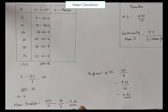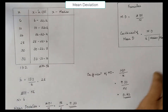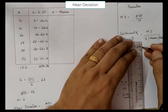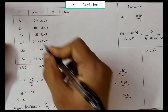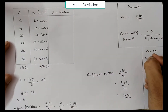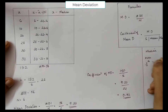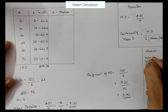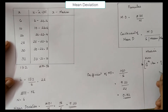Now this is the mean deviation from mean. We are also supposed to find mean deviation from median. For an even number of items, the median is the average of the N/2th item and the (N/2 + 1)th item. Since N is 6, we take 6/2 = third item and the fourth item — the average of the third and fourth item.